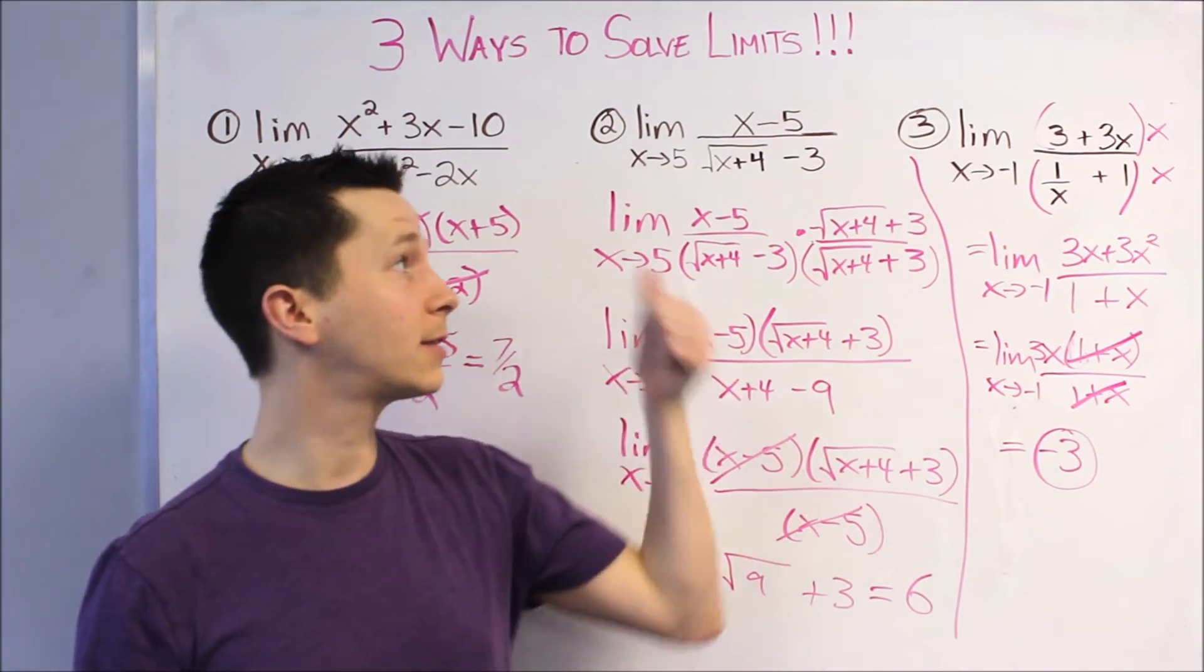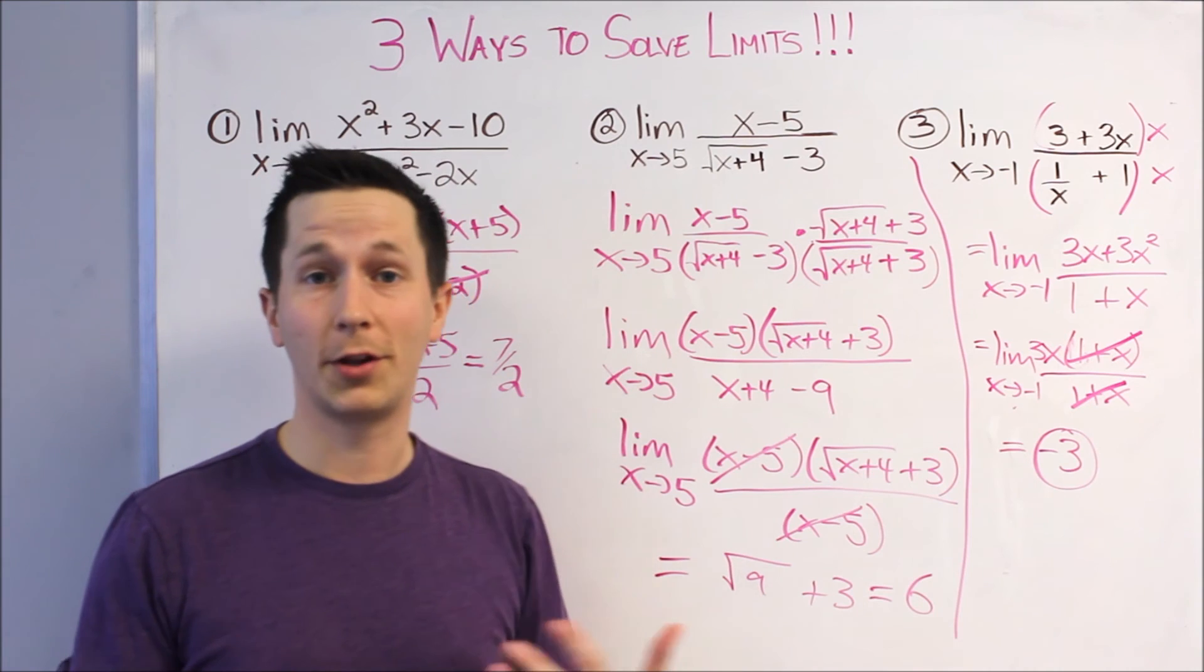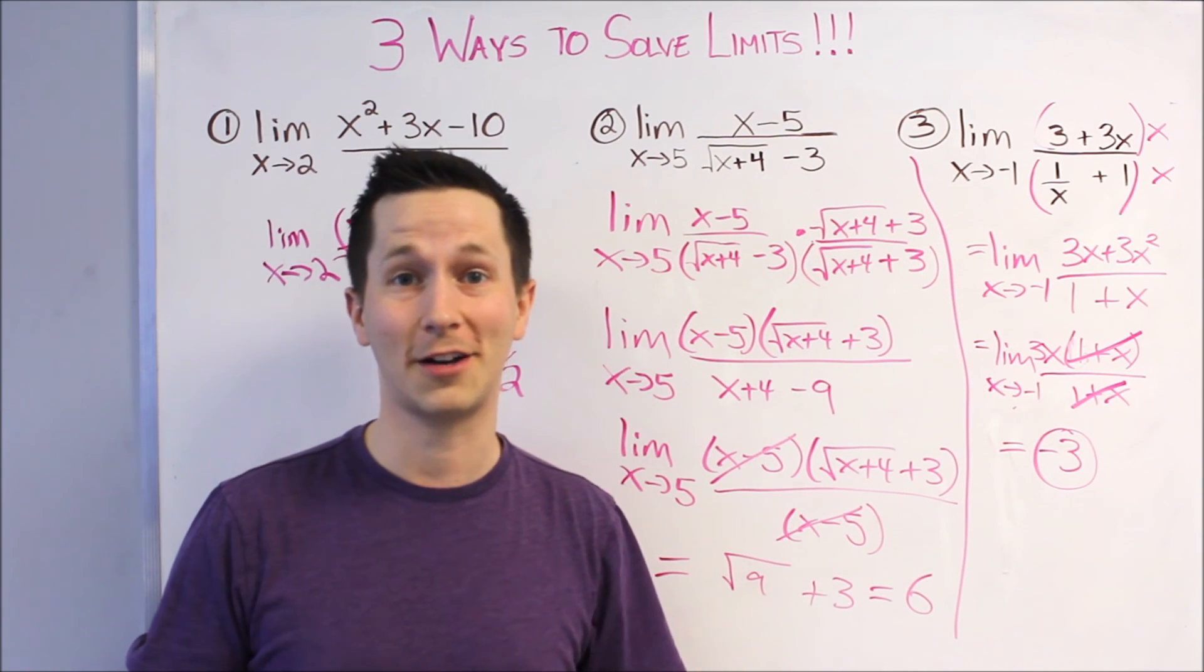So, 3 really solid methods. Factor and cancel, multiply by the conjugate, or multiply by the common denominator. Really easy way to solve limits. Thanks so much. You can always send us more questions to info at arnoldtutoring.com.